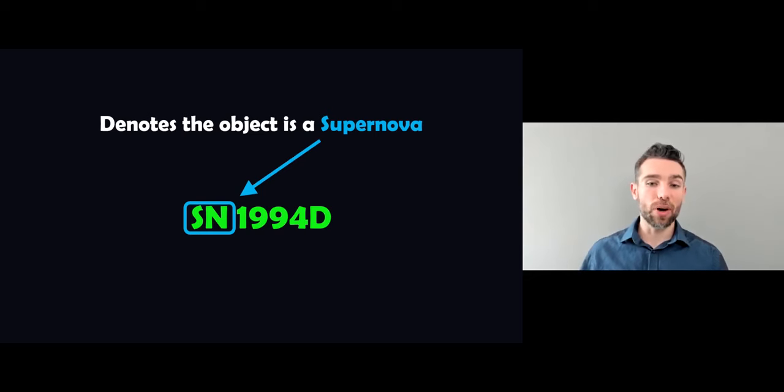The first part, the SN, all supernovas are going to have this SN in front and that tells you that this object is a supernova because you can use a similar technique or method to name things like a minor planet, asteroid, comet, those sorts of things. So the SN at the front will tell you that it's actually a supernova and not a different sort of object.